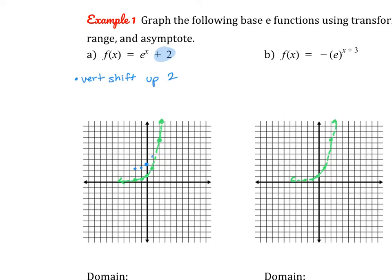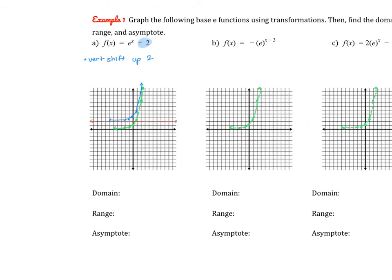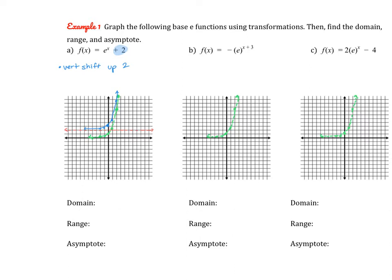We are approximating for a lot of these because they are decimals, but it does give us a pretty accurate graph. Just like any other parent function for our exponential, our original asymptote was at y = 0, but this one has shifted up 2, so our horizontal asymptote has also shifted up to y = 2. Our graph gets really close to y = 2 but never quite reaches it. So our domain is negative infinity to positive infinity, our range is 2 to positive infinity (2 not included), and our horizontal asymptote is at y = 2.